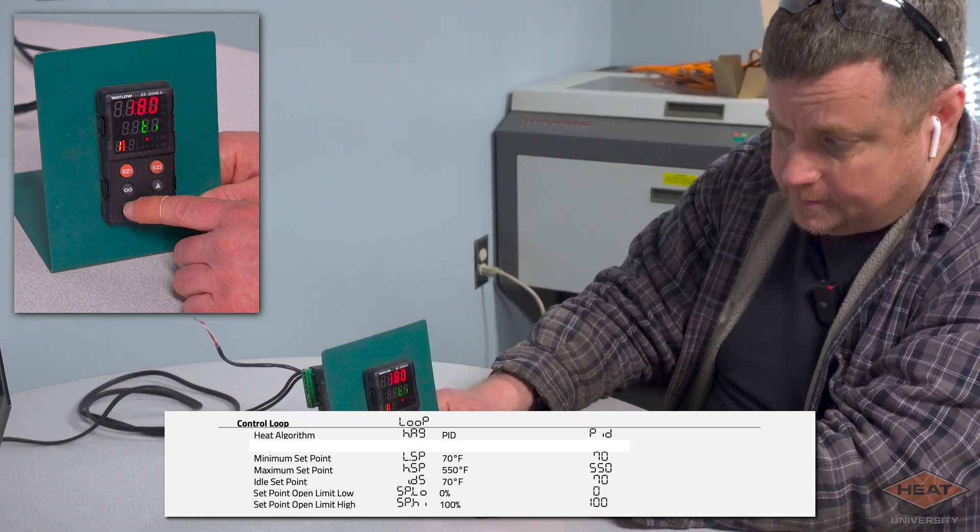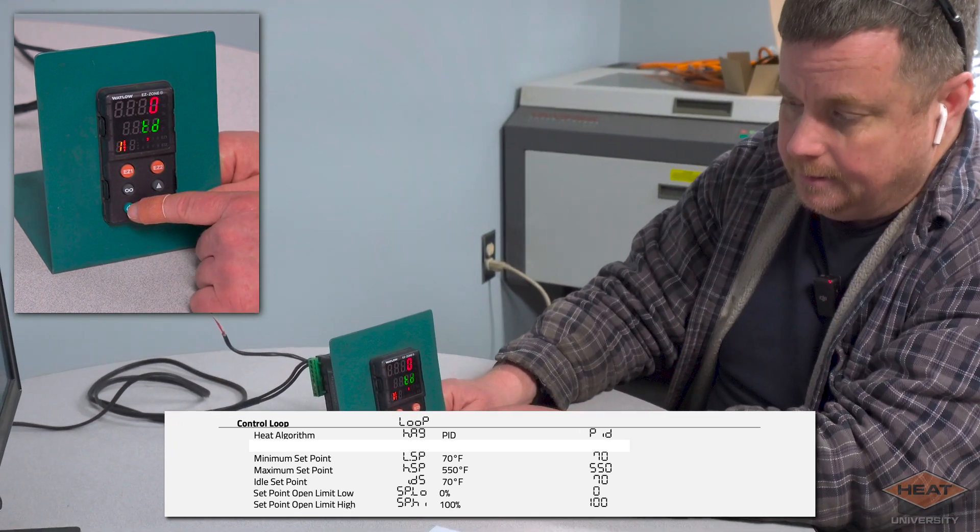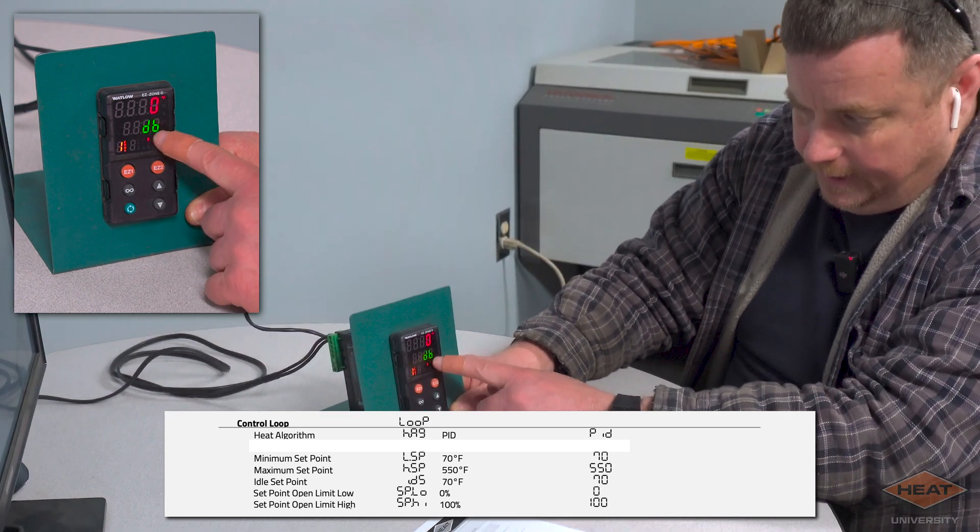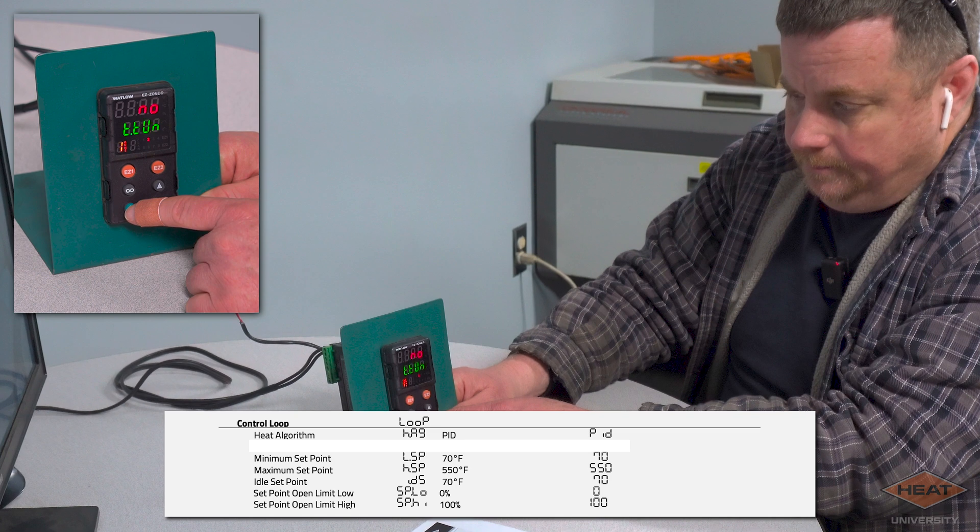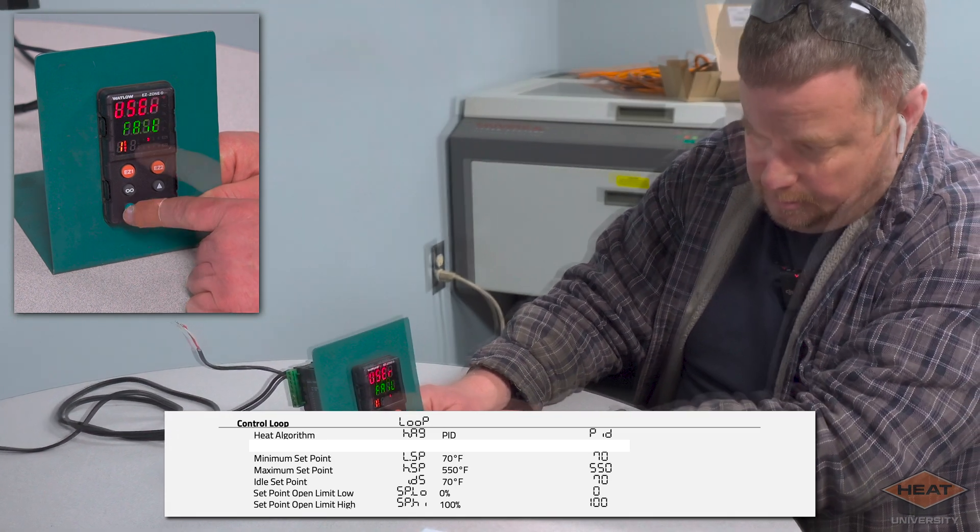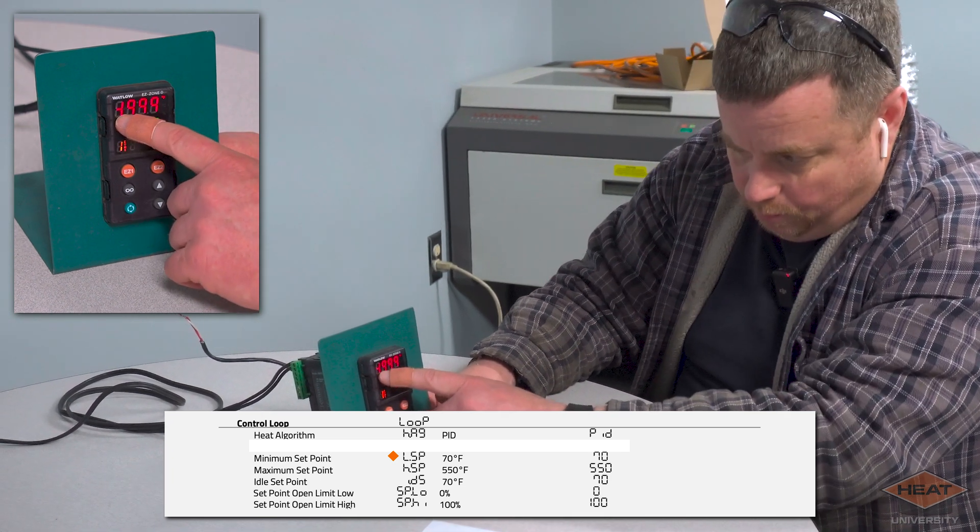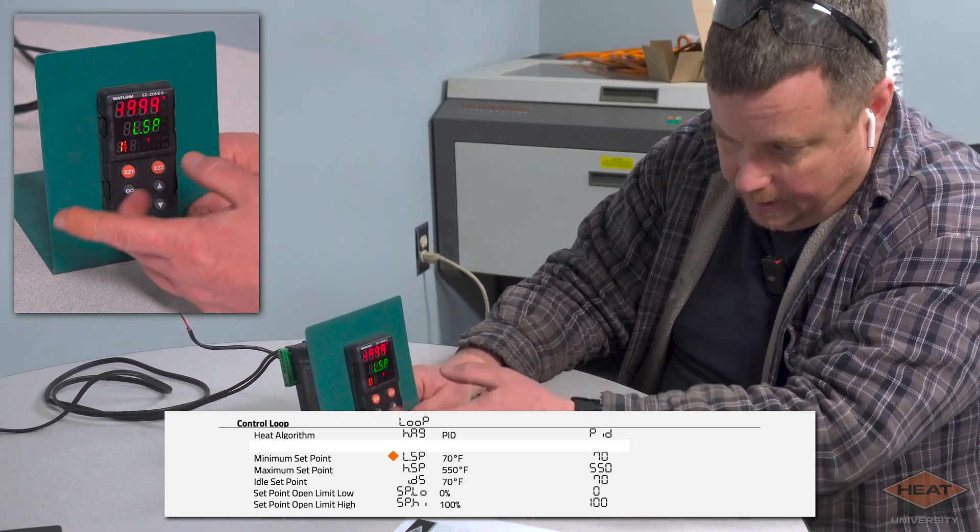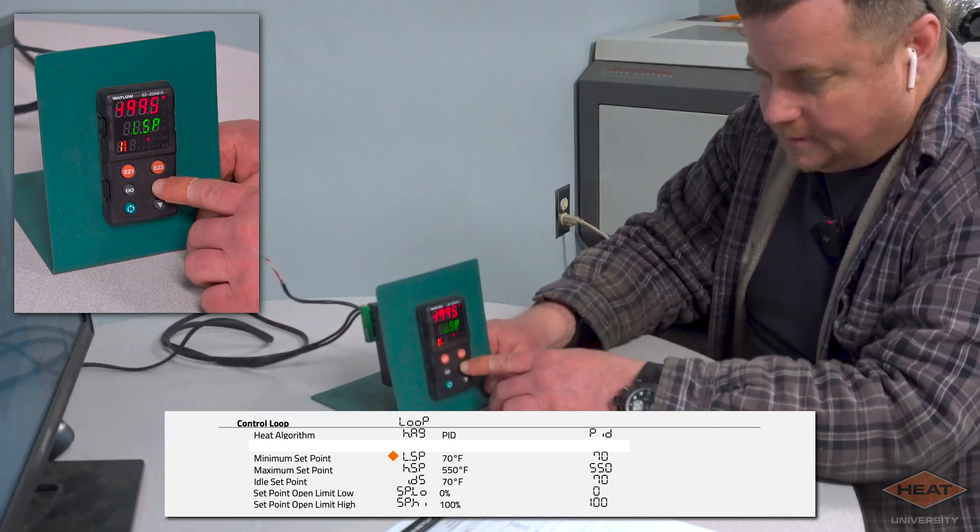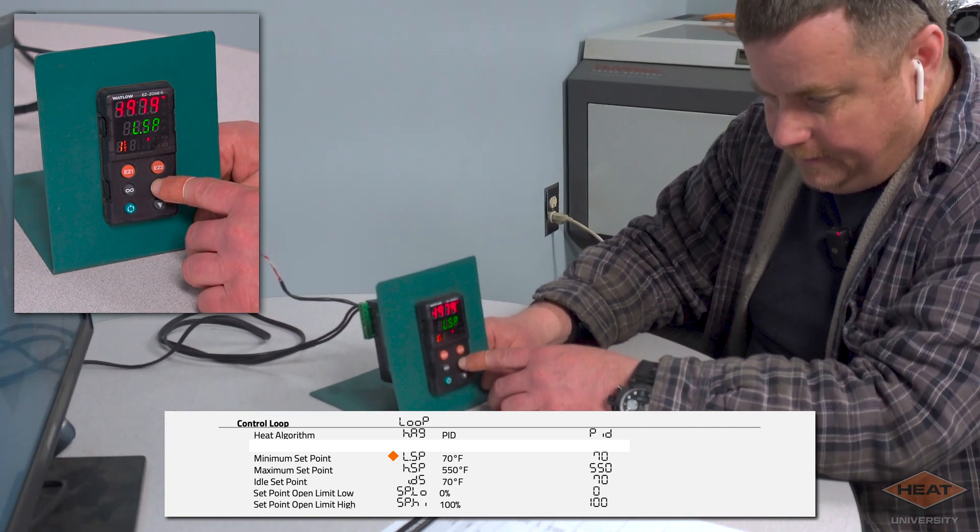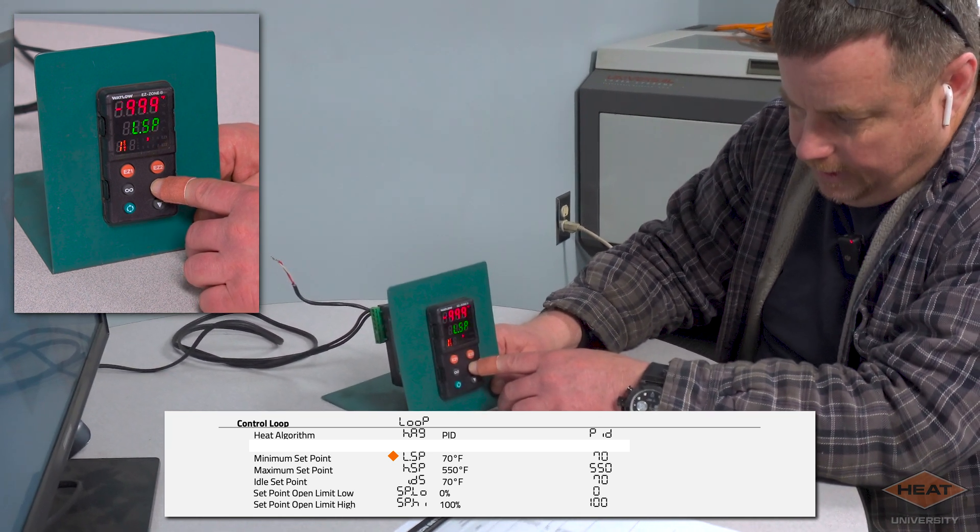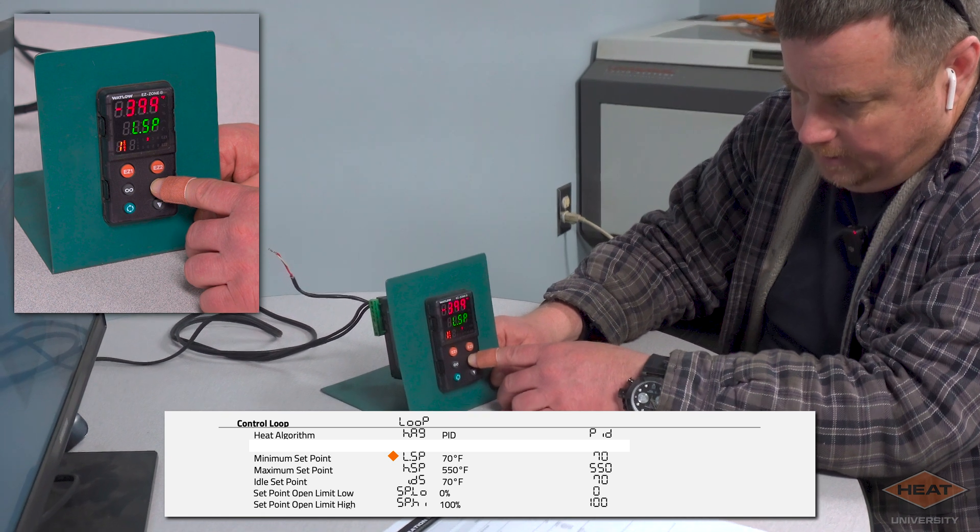Then we'll hit the cycle button again. The cooling algorithm is off because this setup does not have cooling. It's our heating proportioning band 25 degrees, our time integer 180, our time delay, but we're just going to keep hitting this. That's our dead band. We're just going to keep hitting this until we come to our low set point. Now our low set point from the factory is just going to come as minus 1999, and typically our systems' low is either 70 or 50. It's typically 70, so we're just going to hit the up arrow until we get to 70 degrees.